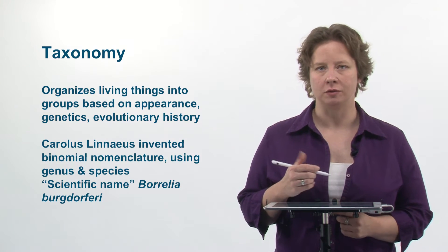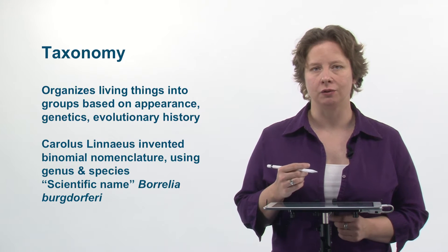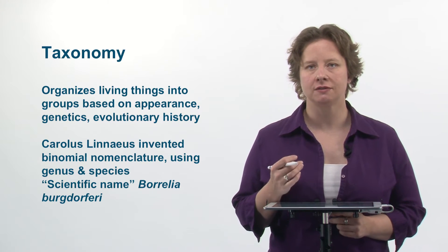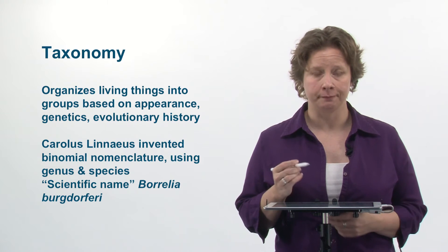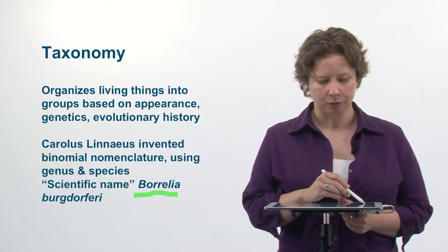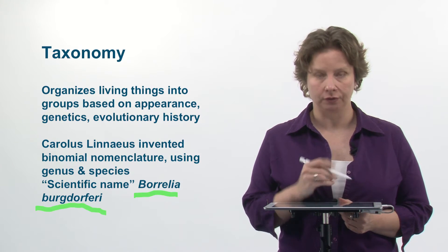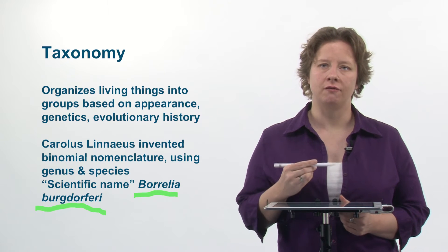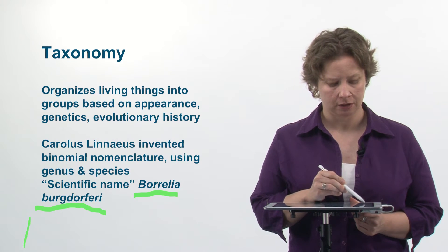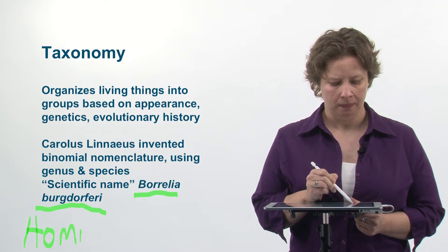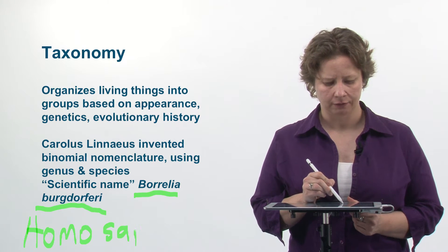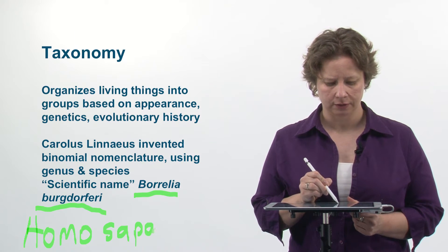Carolus Linnaeus invented binomial nomenclature, which uses the genus and the species name to give something what we call a scientific name. An example of a scientific name is Borrelia burgdorferi, which is the name of the bacterium that causes Lyme disease. Also, humans have a scientific name of Homo sapiens.